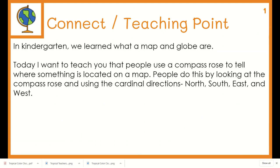Last year in kindergarten during social studies time we learned what a map and globe are. Today I want to teach you that people use a compass rose to tell where something is located on a map. People do this by looking at the compass rose and using the cardinal directions: north, south, east, and west.